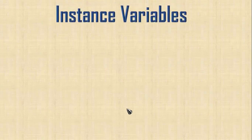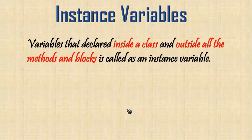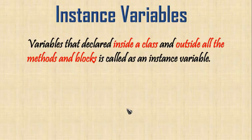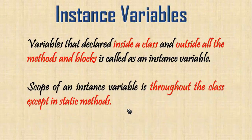Next, instance variables. Variables that are declared inside a class but outside all the methods and blocks are called instance variables. The difference here is that we do not give the static keyword. The scope of an instance variable is throughout the class, except in static methods.